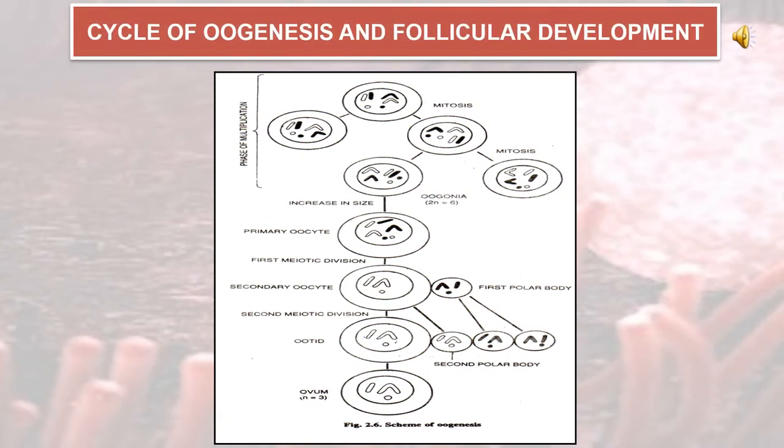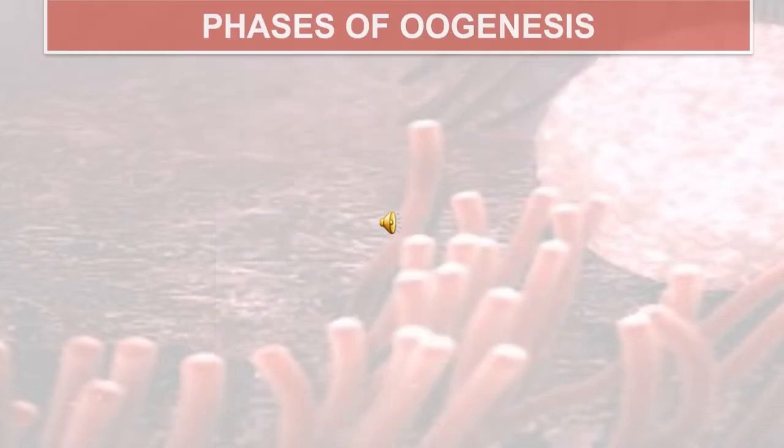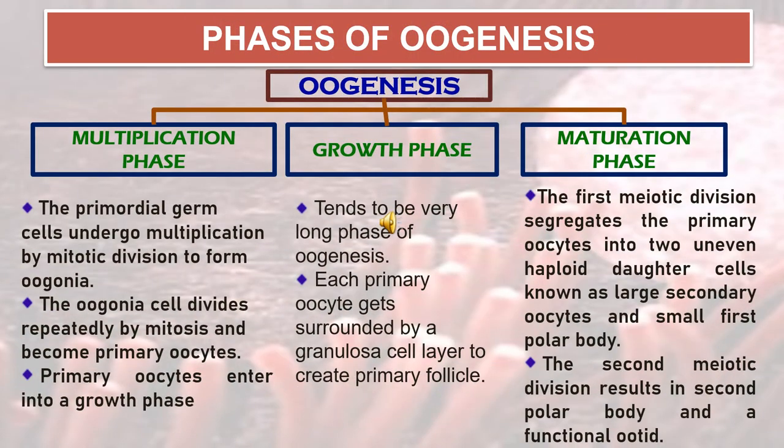This is the diagram of the cycle of oogenesis and follicular development. Oogenesis has three phases: multiplication phase, growth phase, and maturation phase.